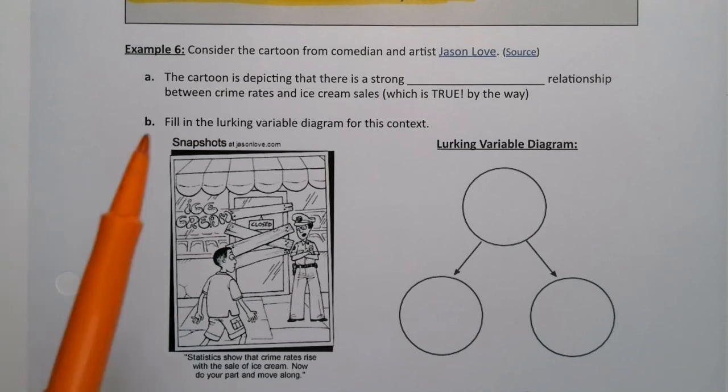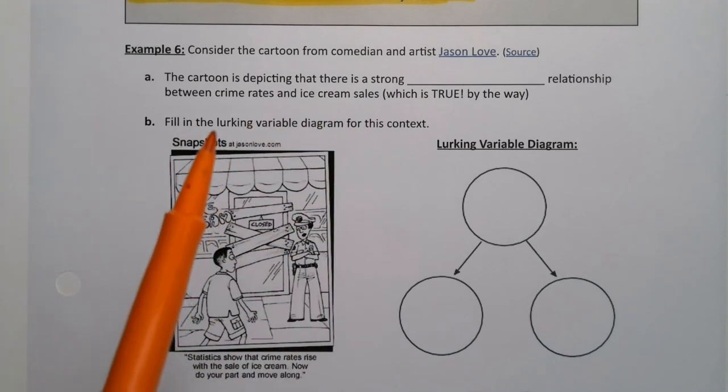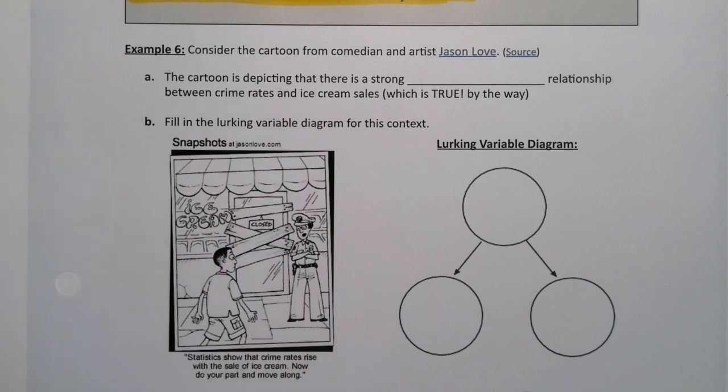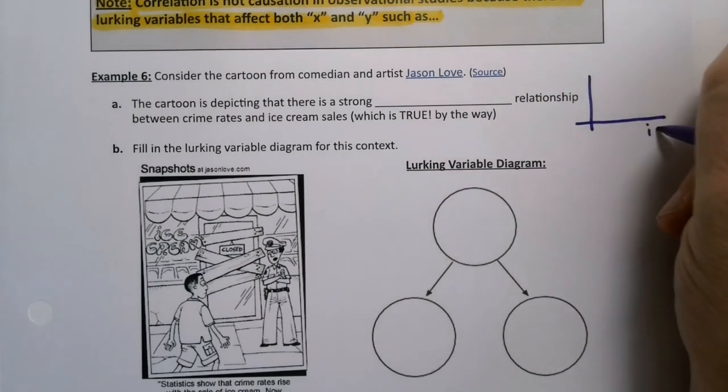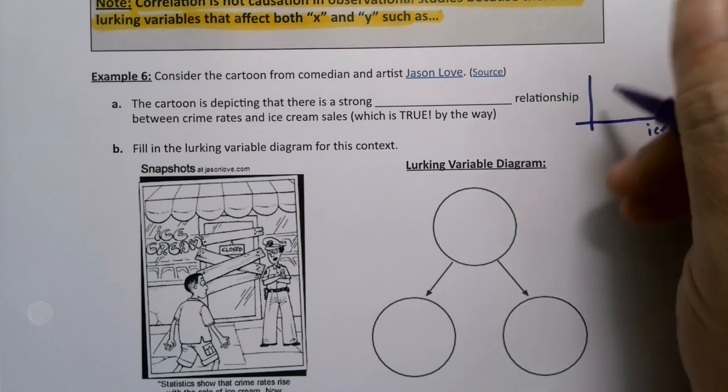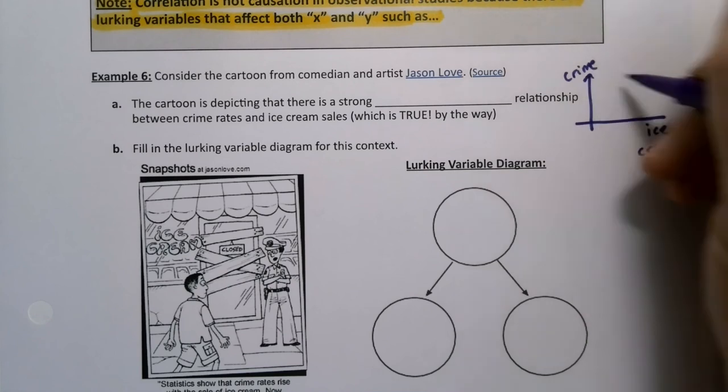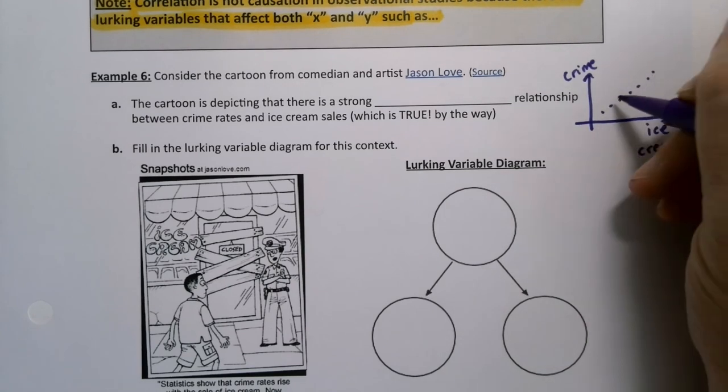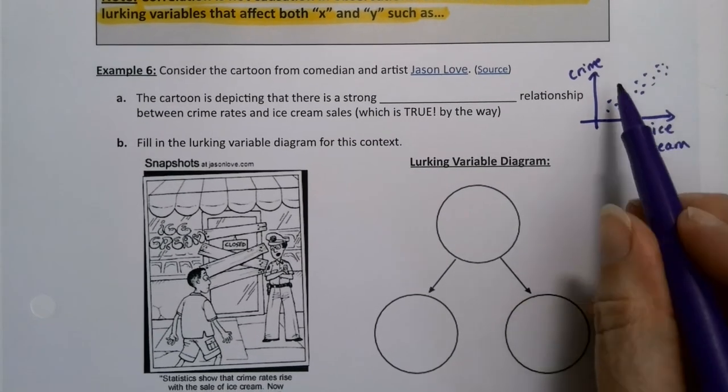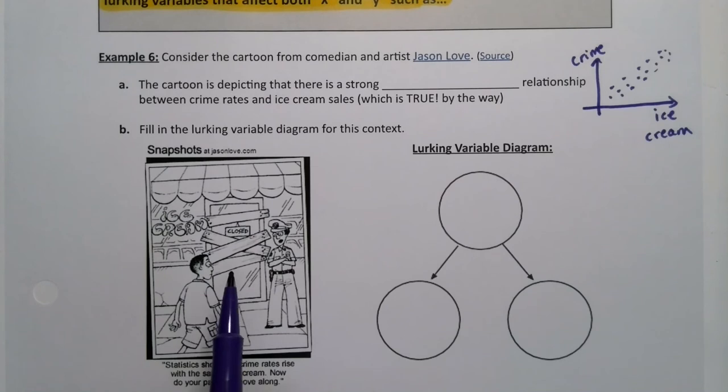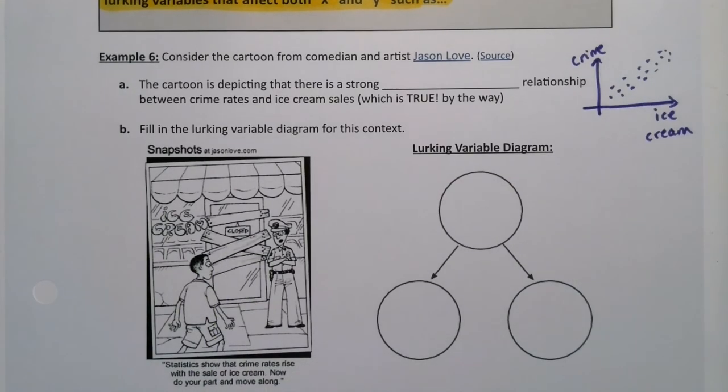So this cartoon is depicting that there is a strong blank relationship between crime rates and ice cream sales, which is very much true by the way. So let's think about this. What kind of relationship are we showing? We're saying if ice cream goes up, ice cream sales go up, crime over here goes up. That's the relationship they're showing. So as the sale of ice cream goes up, crime also goes up. So the police person says well I'm just going to board this up. There'll be no more ice cream sales, therefore there'll be no more crime. It'll be perfect right?